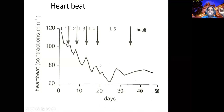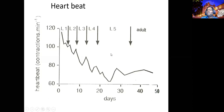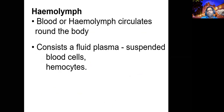Heartbeat also varies with insect age. In a research study, from larval stage one through to adulthood, heartbeat was found to decline with age. Similarly, in humans a newborn's heartbeat may be around 120, declining to about 72 as the child grows. This age-related heartbeat decline is common to both insects and mammals.